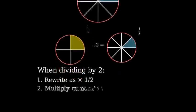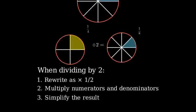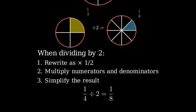To summarize, when dividing a fraction by two, we can first rewrite the division as multiplication by one-half, then multiply the numerators and denominators. And finally, simplify if possible. The result will always be half of what we started with. Therefore, one-fourth divided by two equals one-eighth.